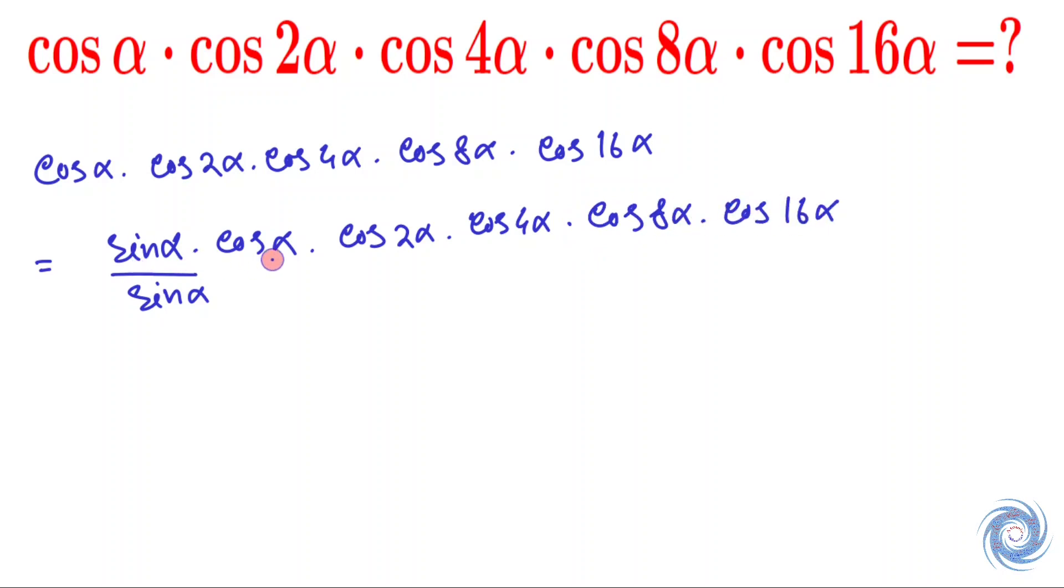Here we have sin alpha times cos alpha, so now we can use the formula of sin 2 theta. That is, sin 2 theta equals 2 sin theta cos theta.